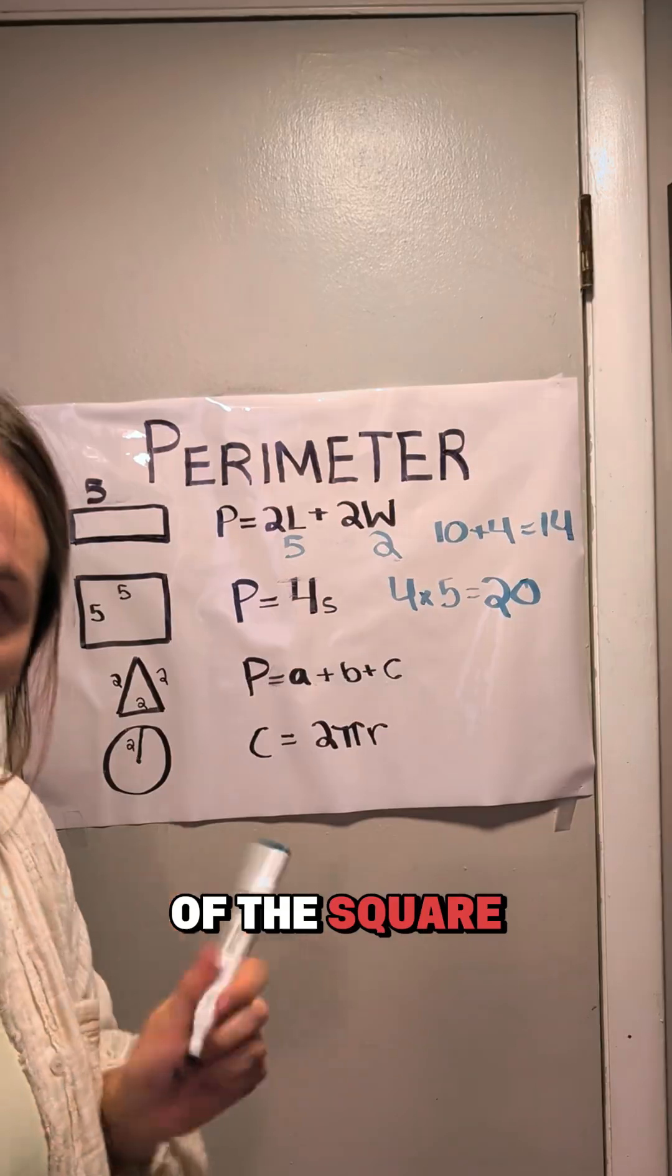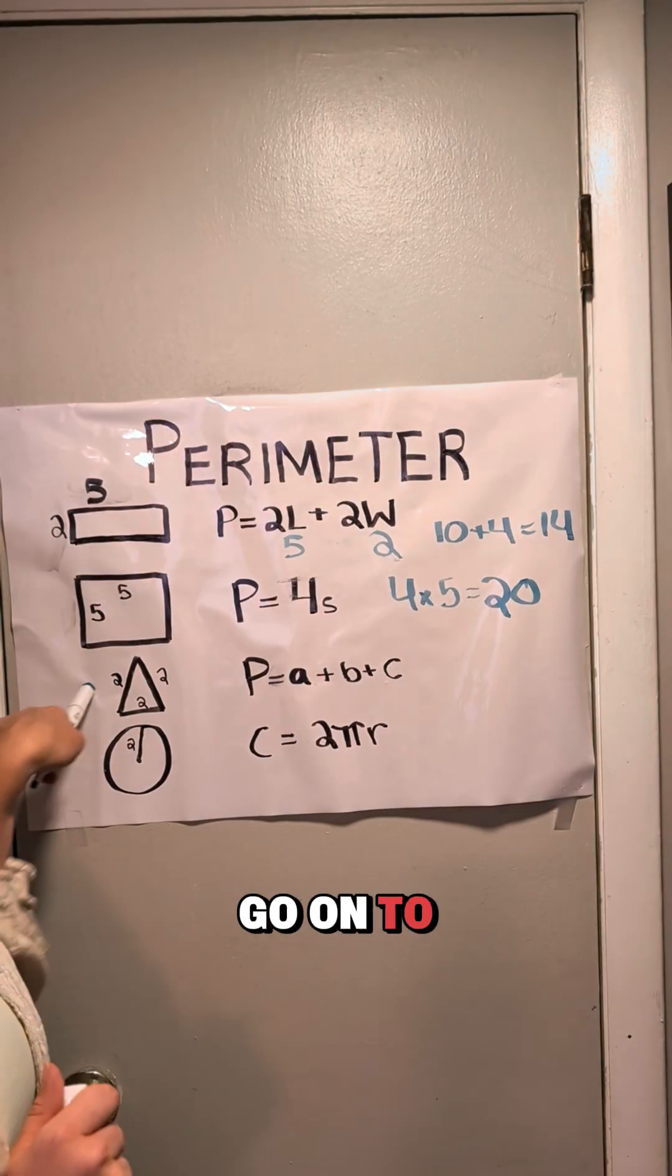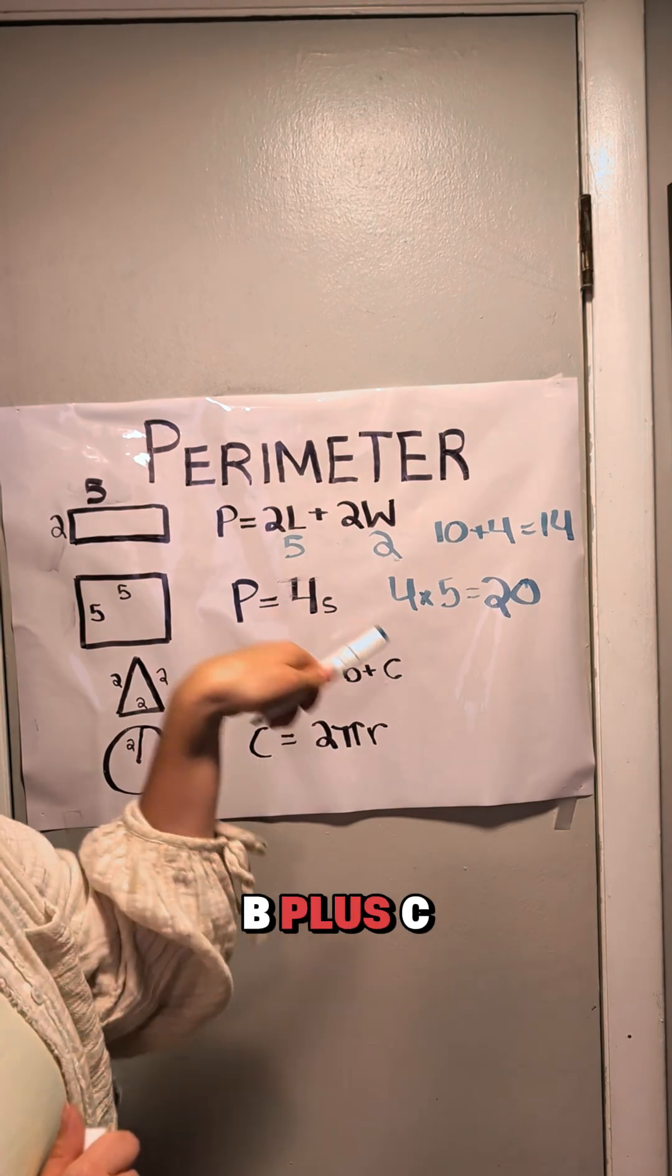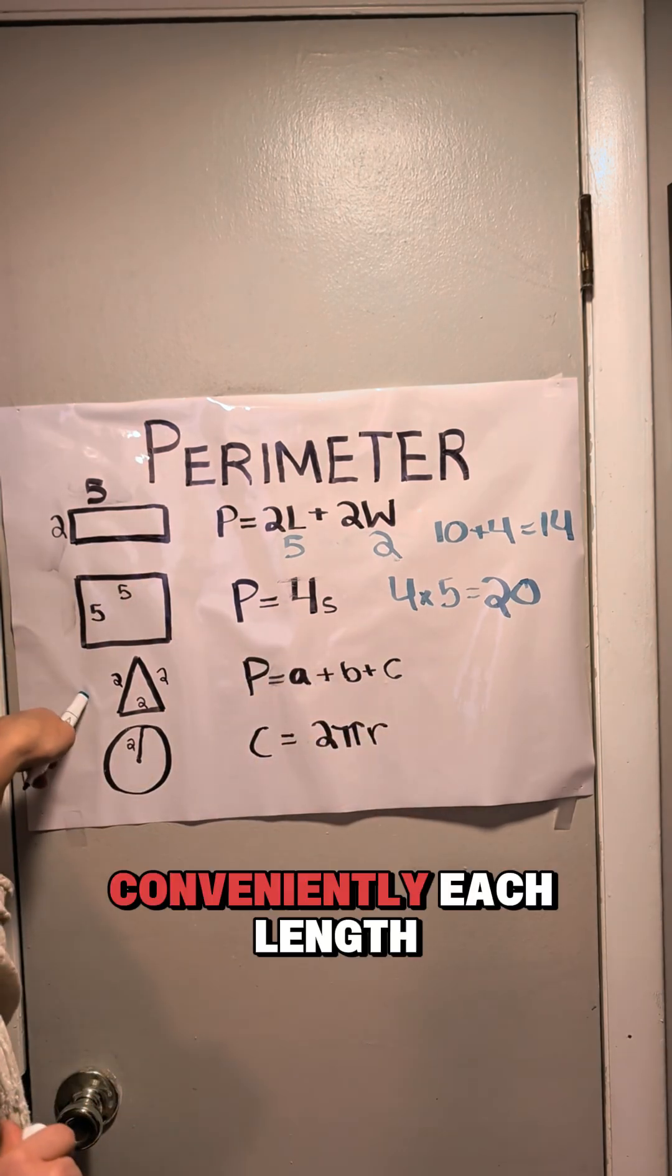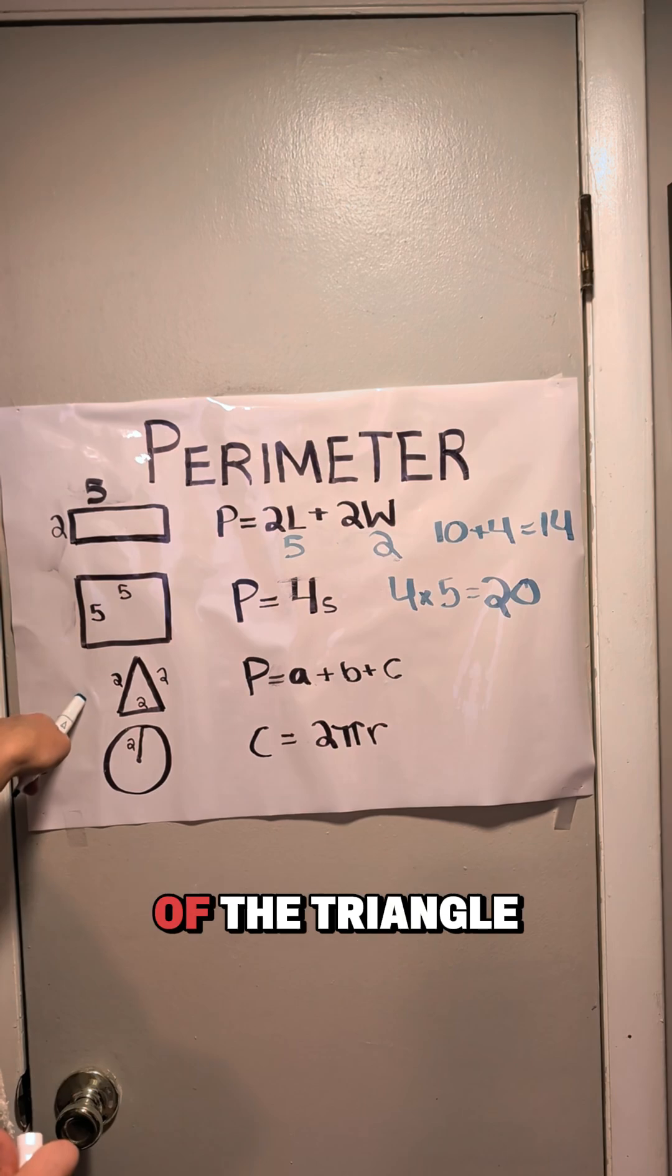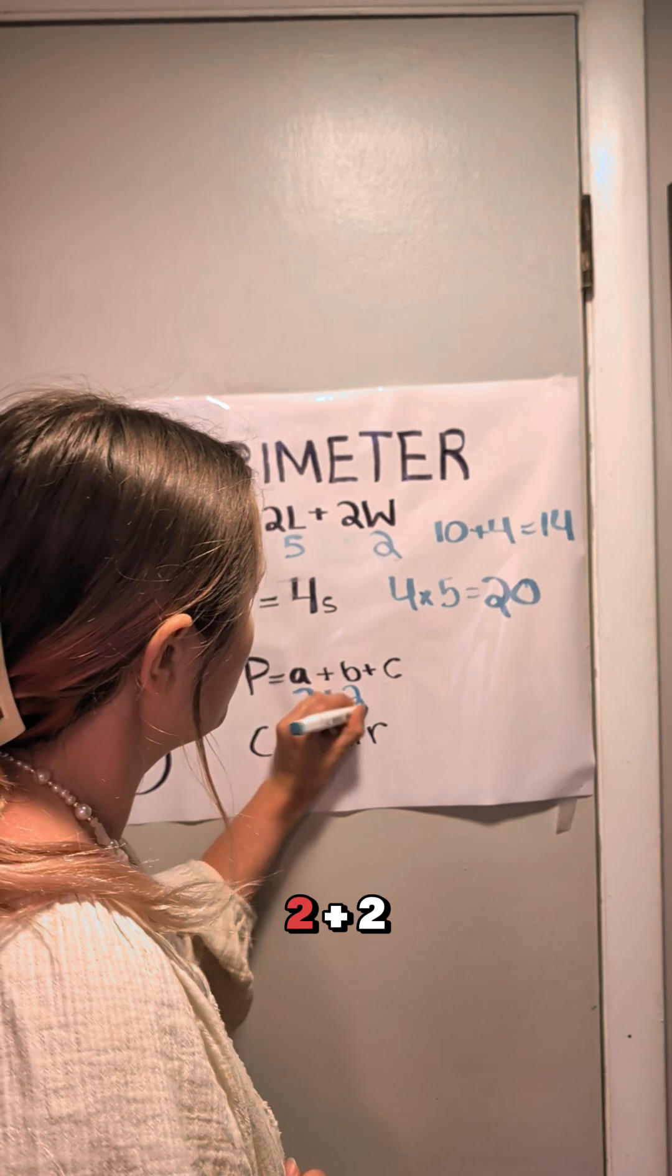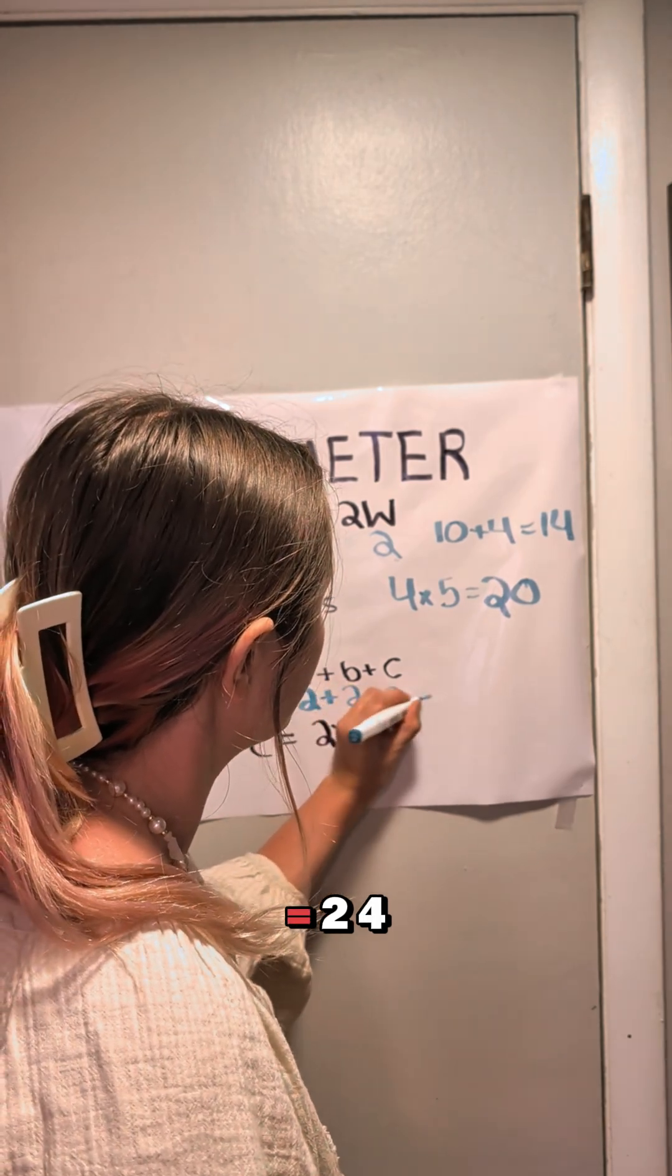That is the perimeter of the square. Now we're going to go on to the triangle, which is P equals A plus B plus C. Conveniently, each length of the triangle is 2.